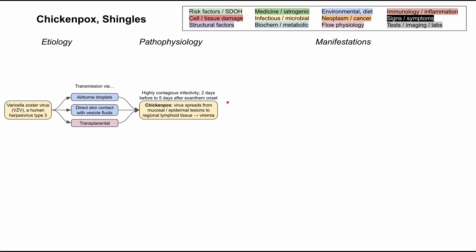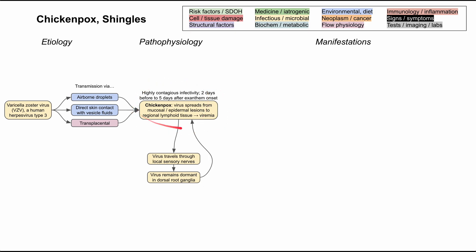The exanthem is characterized by many vesicles throughout the body that change with time and have a characteristic distribution. While you have this first infection — this chickenpox viremia — the virus travels through local sensory nerves and remains dormant in the dorsal root ganglia. This will become relevant when we discuss shingles. In immunocompromised patients, it can actually re-cause a viremia in some uncommon cases.